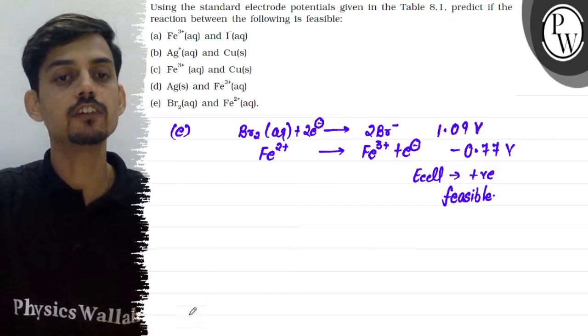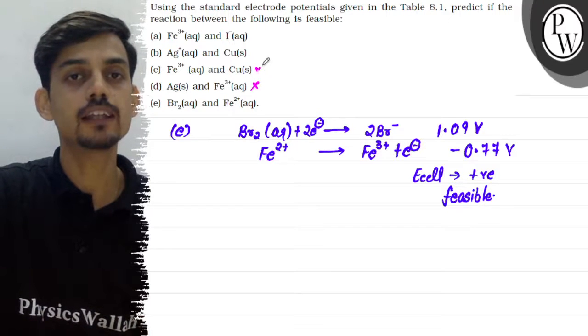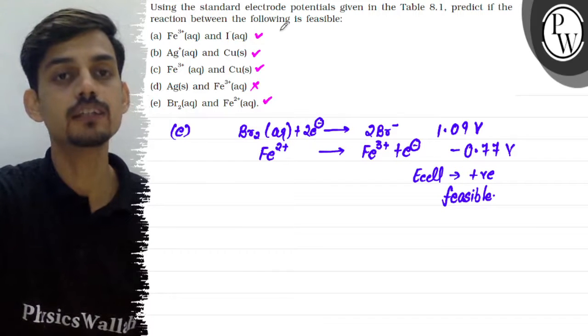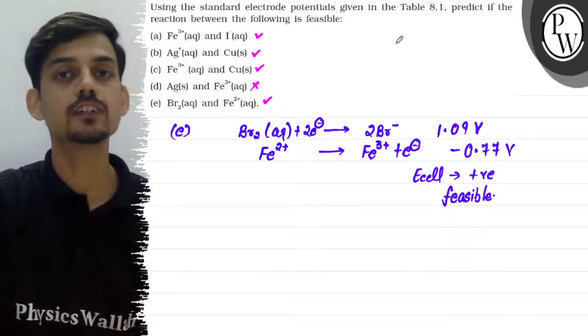Given paancho cases me, hum paas saari fourth case ko chodke baaki sari reactions feasible hain. All the four reactions are feasible and the D part reaction is not feasible. Hope this clears the question. All the very best.